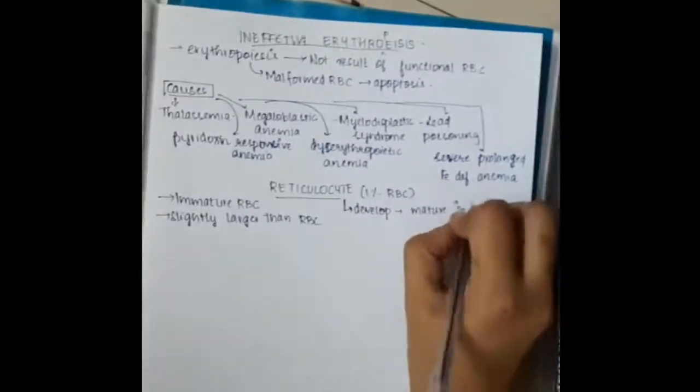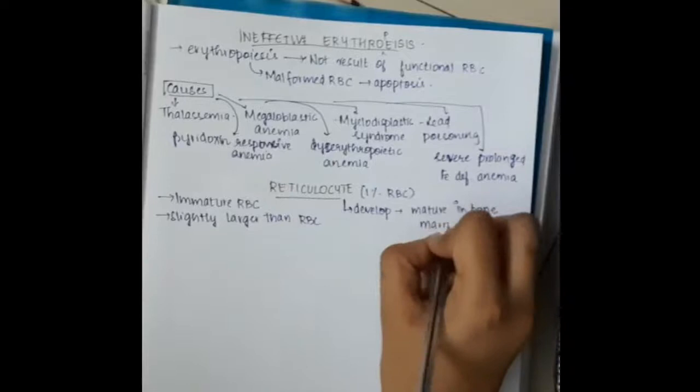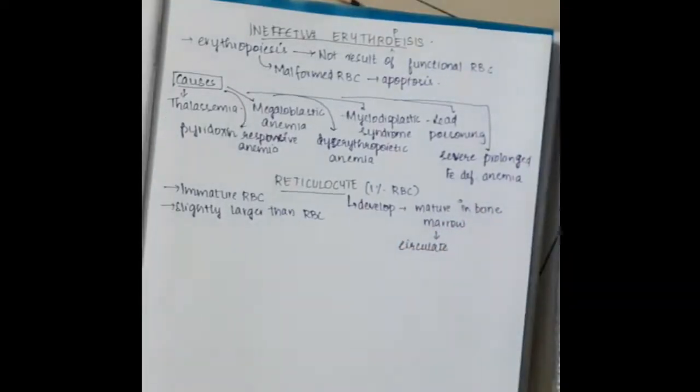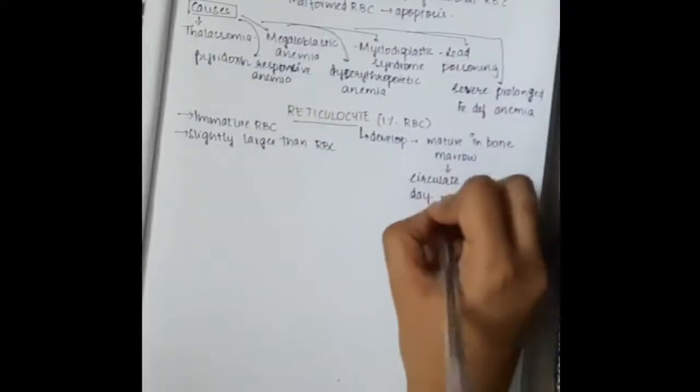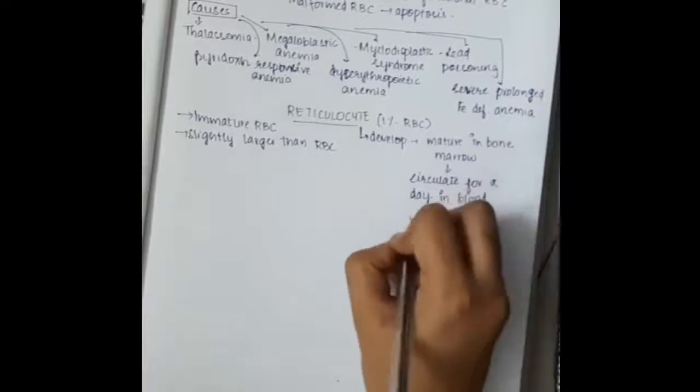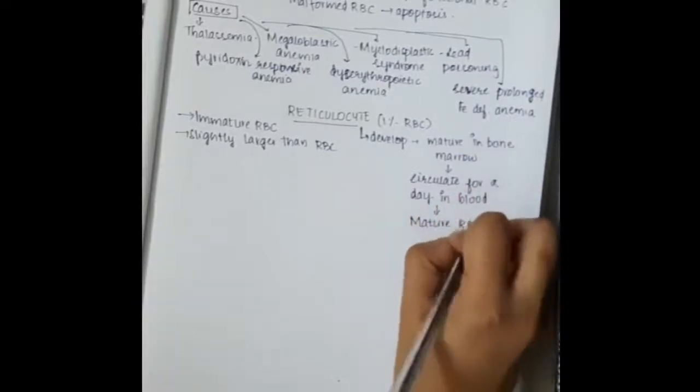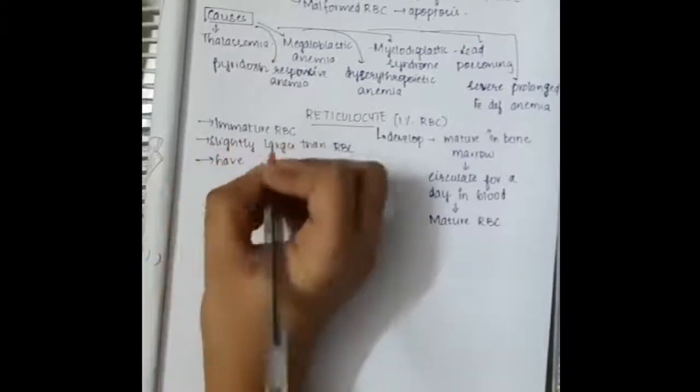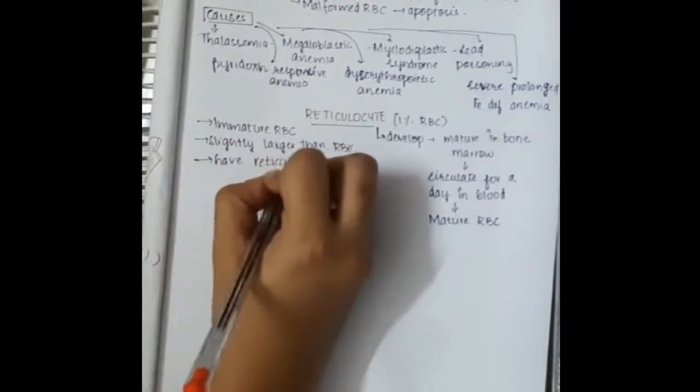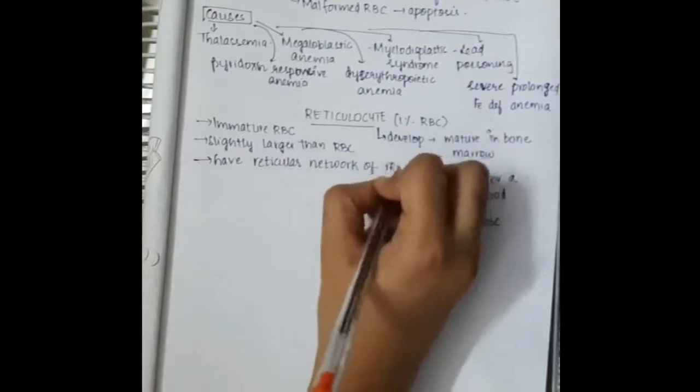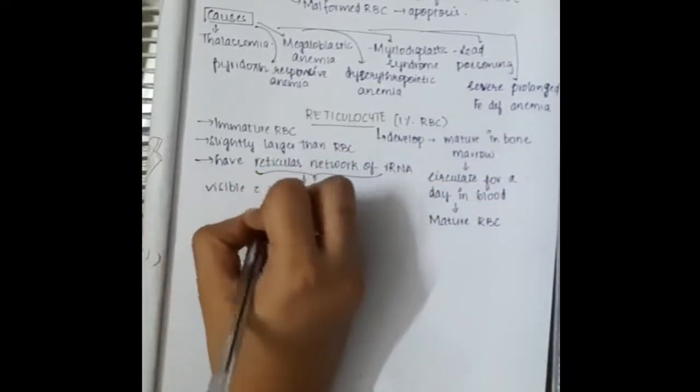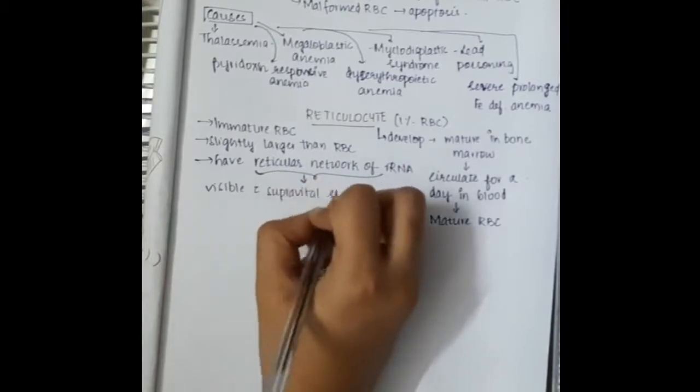It develops and matures in bone marrow and will circulate for a day in blood, leading to the formation of mature RBC. This reticulocyte gives rise to a reticular network of rRNA, and this reticular network of rRNA is visible with supravital stains.